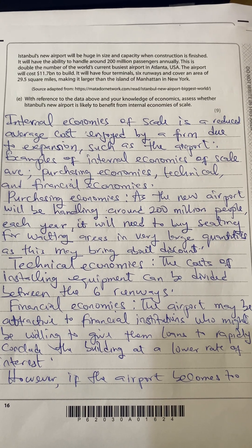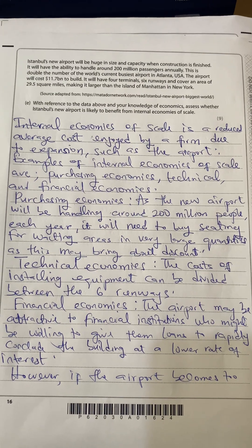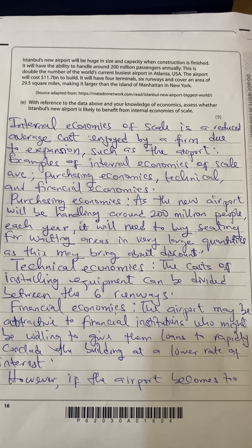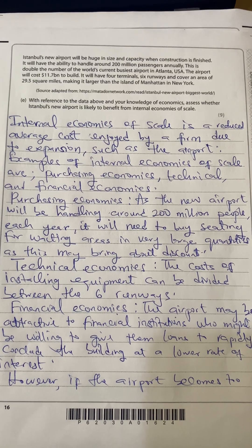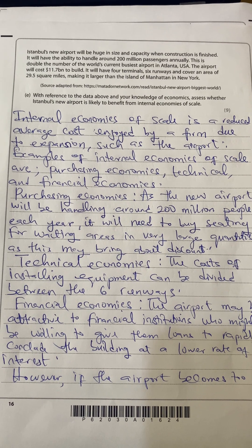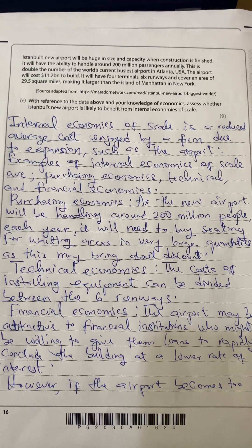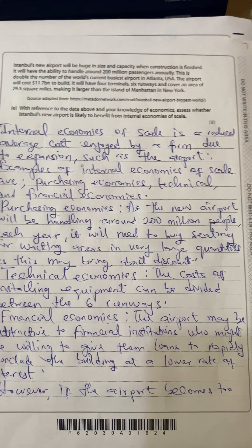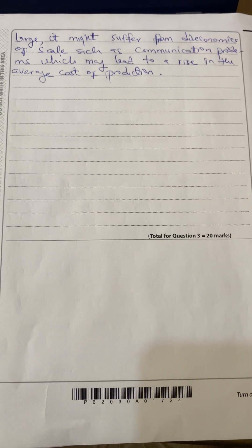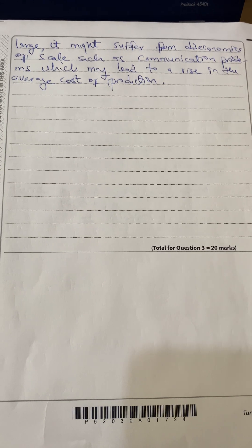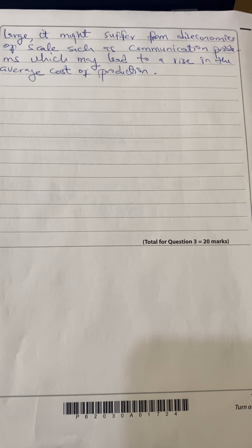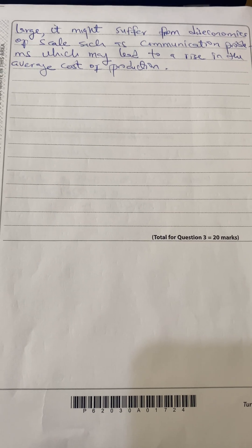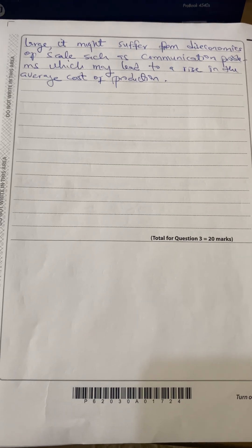For financial economies of scale, the airport may be attractive to financial institutions who might be willing to give loans to conclude construction at lower interest rates. The airport would be considered low risk. However, if the airport becomes too large, it might suffer from diseconomies of scale such as communication problems, leading to a rise in average cost of production. These days, communication problems might be solved with ICT — information and communication technology.